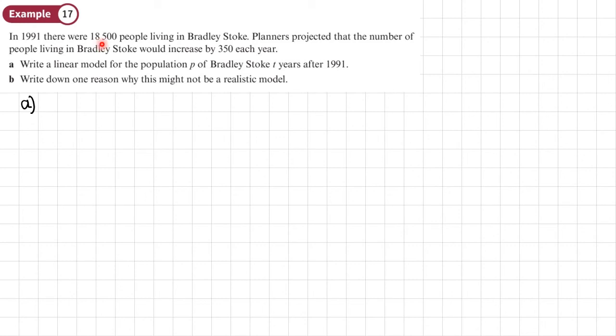So my initial value for the population is 18,500. That's like my y-intercept. That's like my value of C. So let's write down 18,500 was the initial population. So that's going to go where I would put C in y equals mx plus C.